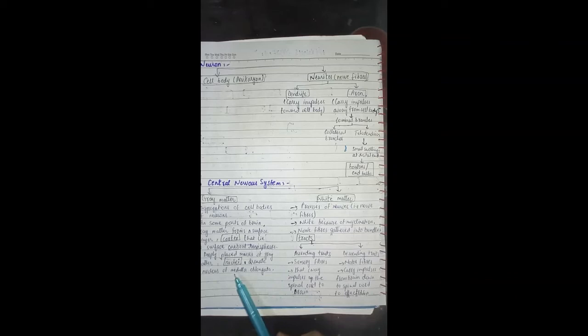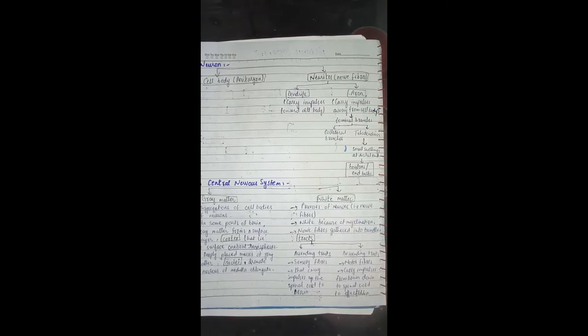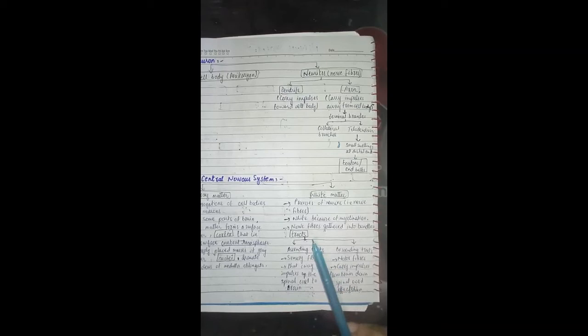The deeply placed masses of gray matter are called nuclei, such as the arcuate nucleus in the medulla oblongata. These are deeply placed in white matter. The myelination of fibers gives the white color to white matter.